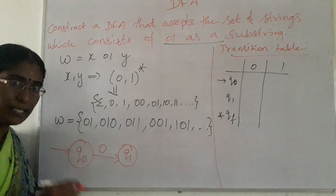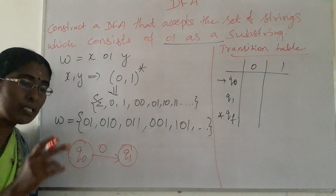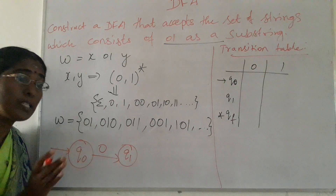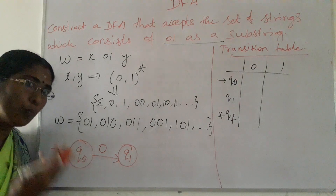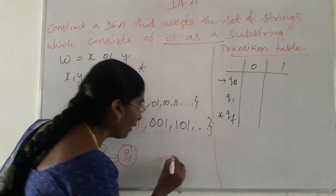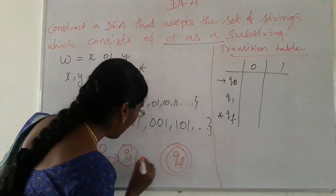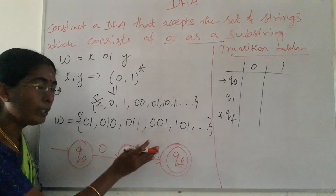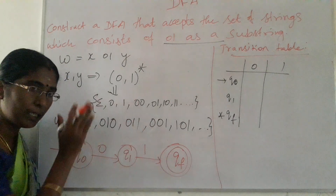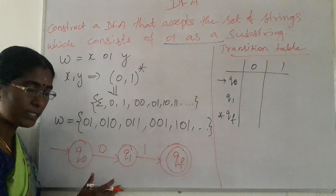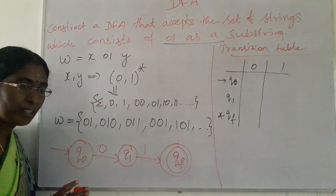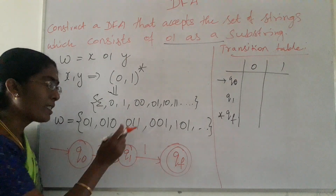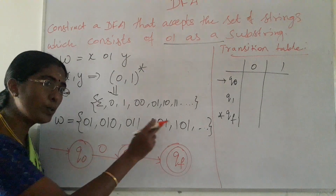If the string has a second '0', the sequence will be '00'. The substring '00' means we should not forward to a final state. But if '1' is the second symbol after '0', then we can forward that transition to the final state. These are the three states we should consider for constructing this DFA — the minimum number of states required for this particular condition.